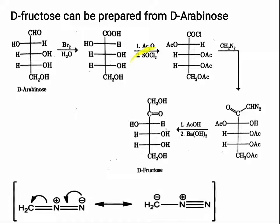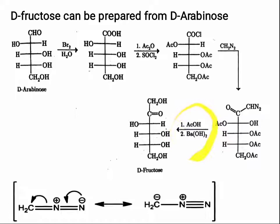After forming the acid chloride, add diazomethane (CH₂N₂). The OH groups are converted to OAc and the COOH group is converted to COCl. Diazomethane acts as a nucleophile in an SN2 reaction — the CH₂⁻ attacks the carbonyl carbon and chlorine leaves — giving the diazoketone intermediate.